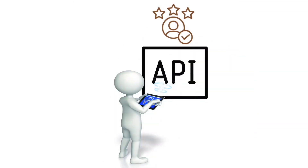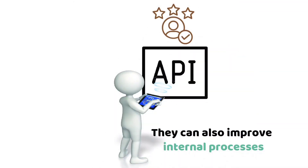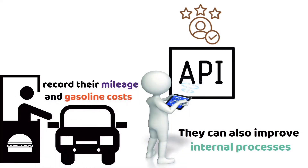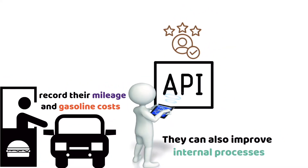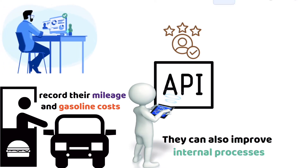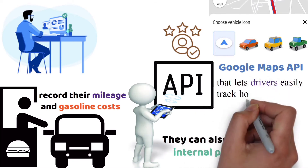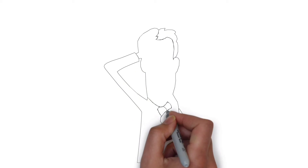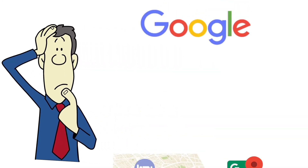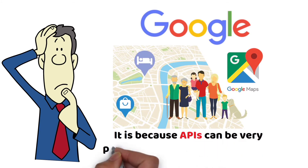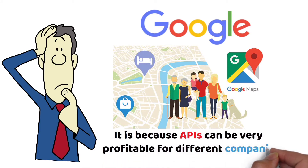APIs go beyond making better customer experiences — they can also improve internal processes. Maybe you want all your drivers to record their mileage and gasoline costs in a certain way. Your developers could potentially use the Google Maps API to create an internal phone app that lets drivers easily track how many miles they travel each day. But why would a company like Google let the public use its mapping technology? It is because APIs can be very profitable for different companies.